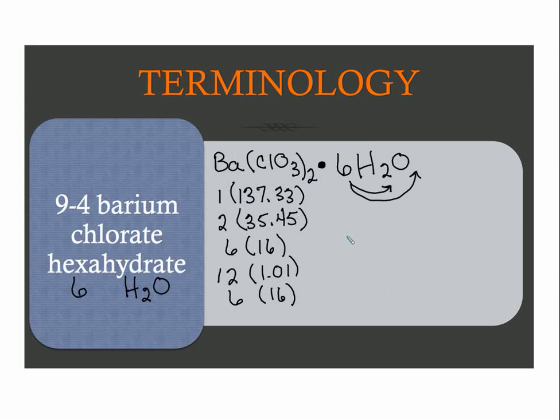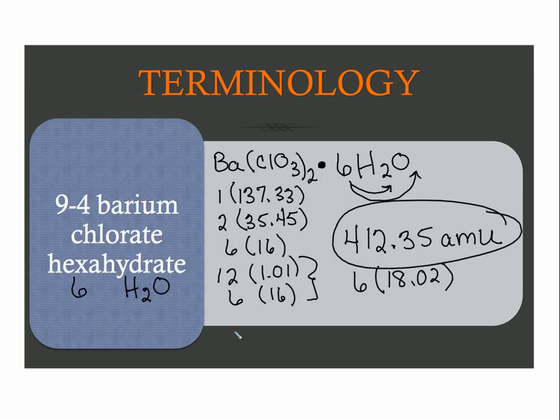If you add all that up, you should get the massive number of 412.35, always take these to two decimal places, atomic mass units. Now, what some people like to do - you're going to realize that water is 18.02, so you can actually do six times 18.02 for the water if you want to treat that as a whole. That is our final answer for that.